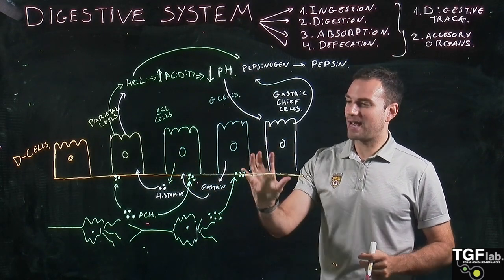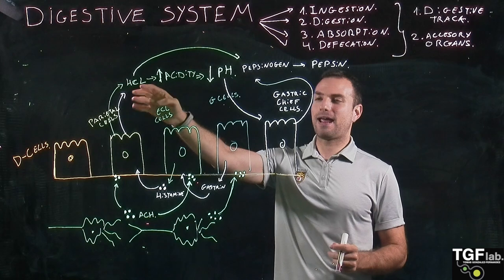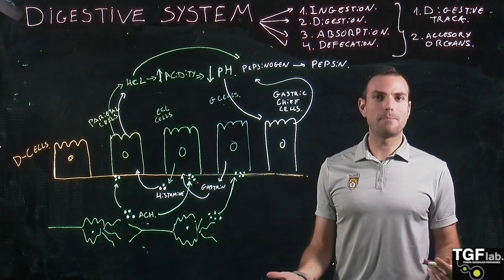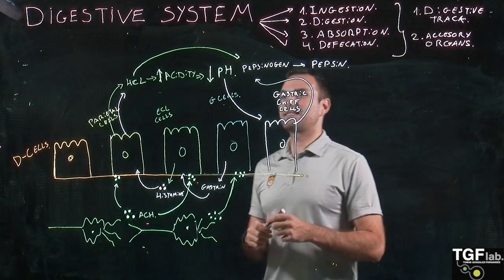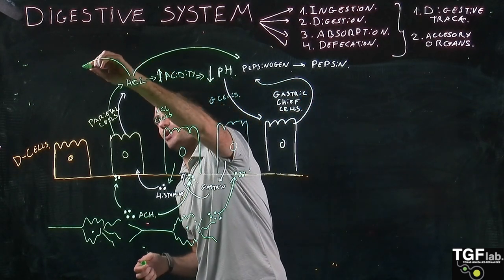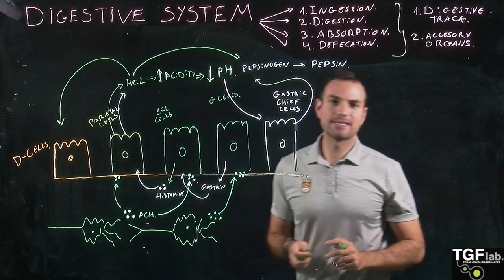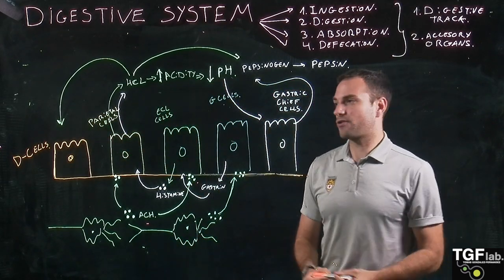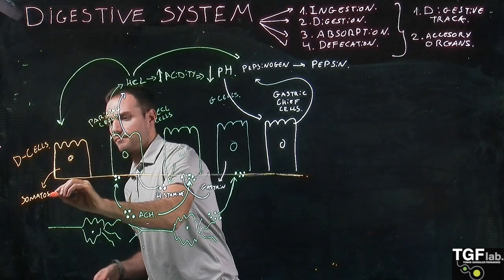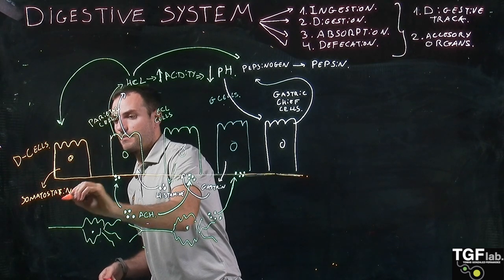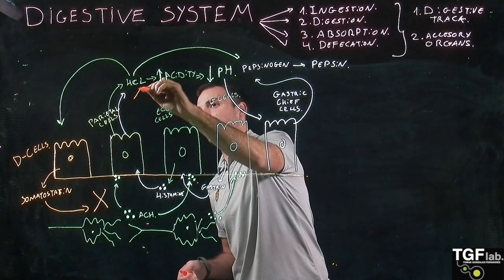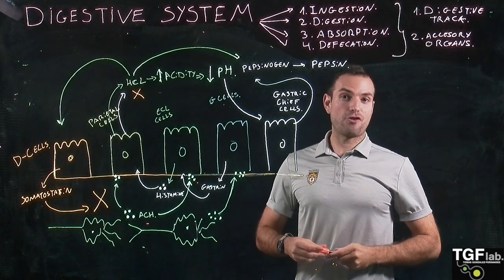So we have seen the activation cascade with acetylcholine, gastrin, histamine, hydrochloric acid, and then the conversion of pepsinogen into pepsin. But at some point this process has to stop as well. The increase in acidity and the lowering of pH — the increase in protons — acts on the D cells. These D cells secrete another hormone called somatostatin, which inhibits this process and reduces the secretion of hydrochloric acid.